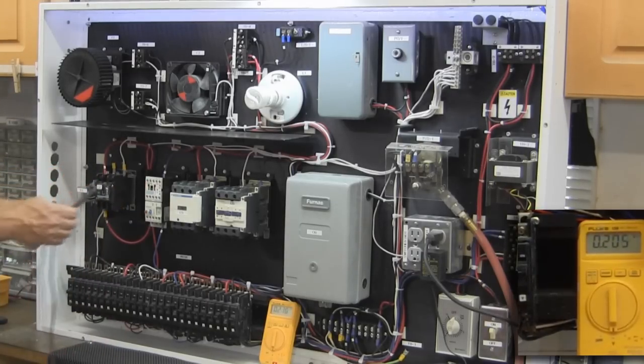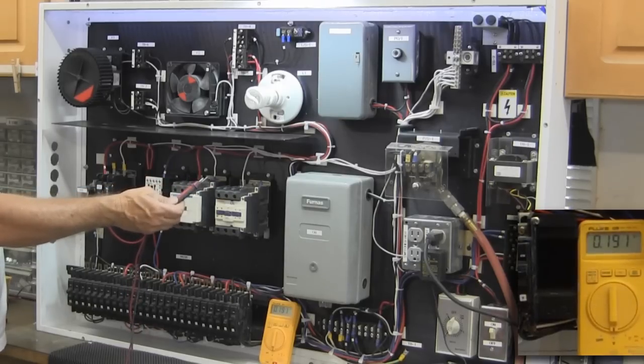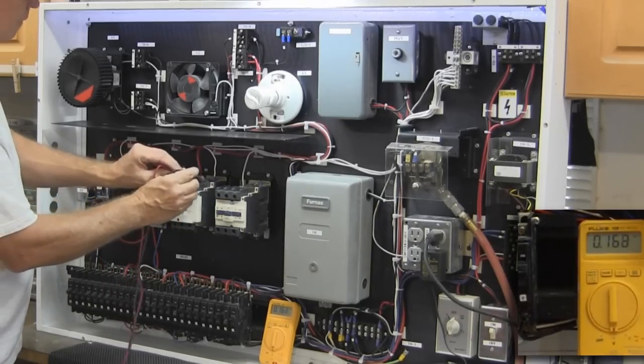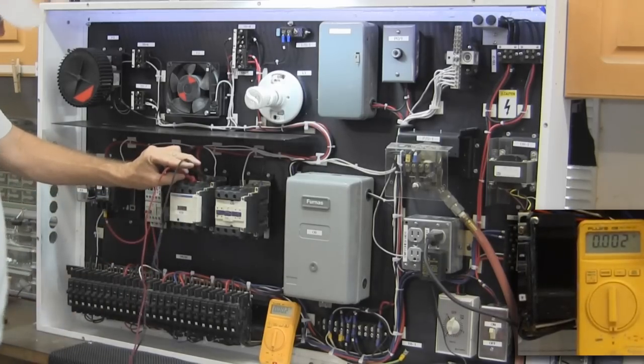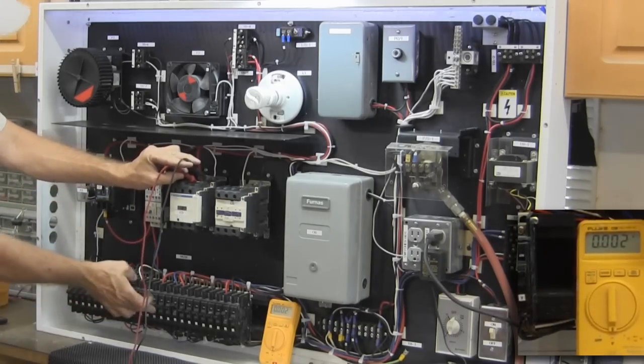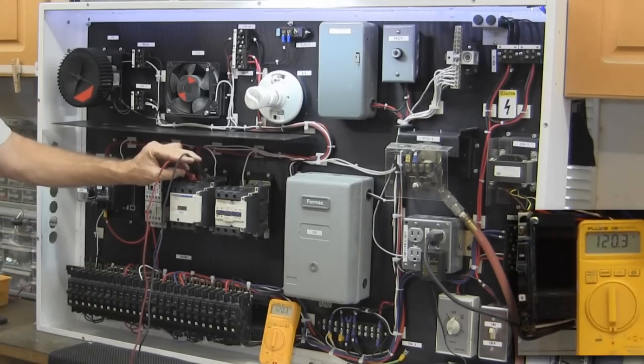So let's go to one of these coils and these particular coils are 110 volt. So I'll check between those two and I don't have anything. So let me turn on N, pulls that coil in. I've got 120 there.